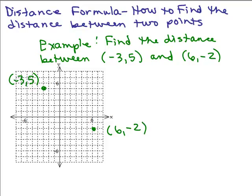What we're trying to find is the straight-line distance between those two points — that's distance d. How about if we make a right triangle here? This assumes you already know the Pythagorean Theorem: you have two legs of a triangle, and the length of one side squared plus the length of the other side squared equals the hypotenuse squared. The distance is really the hypotenuse of this triangle.